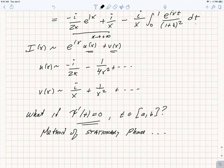So, that naturally brings us to the question of what happens if psi has a critical point within the domain? What happens if psi prime of t vanishes somewhere between a and b? That brings us to the method of stationary phase, which we will discuss next time.